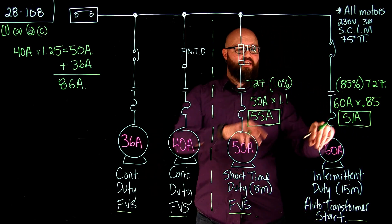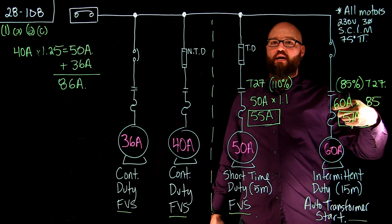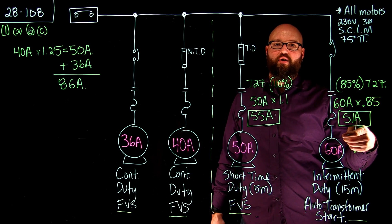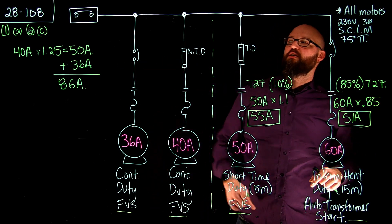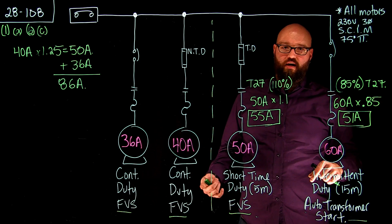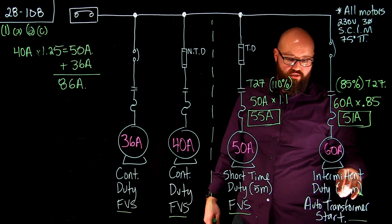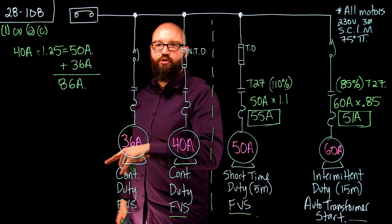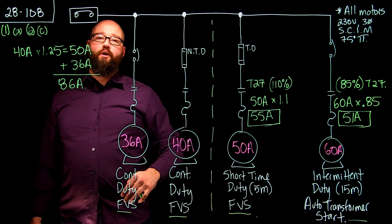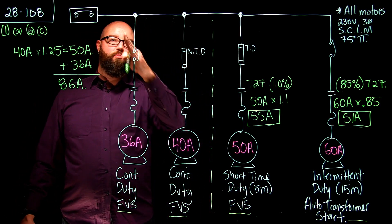So we're going to take these numbers. I've got a choice now. I have the 60 amp FLA or the 51 amp calculated. It very specifically tells me in 28.108 sub 01 Item C to take the calculated values. So we're going to take those over here, and we're just going to add them straight to what our continuous duty rated motors contribute towards this.